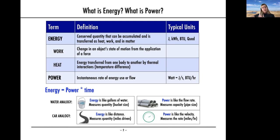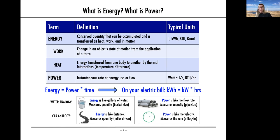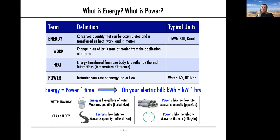Another analogy is thinking about a car: energy would be the distance traveled — miles driven — while power is your velocity, your miles per hour. When you think about your own electricity use, you are paying for the amount of energy you use in a month. On your electric bill you're going to see kilowatt-hours — the electricity company takes the kilowatts (the power you drew) over the time you drew it, and gives you kilowatt-hours: your energy for the month.